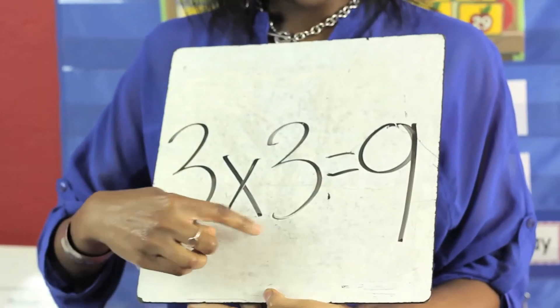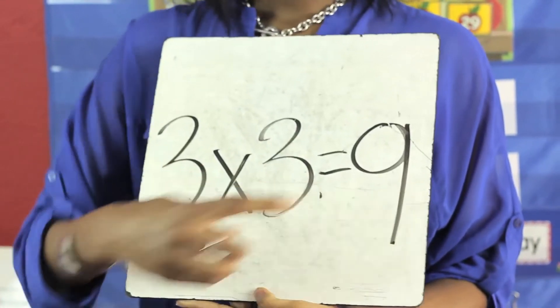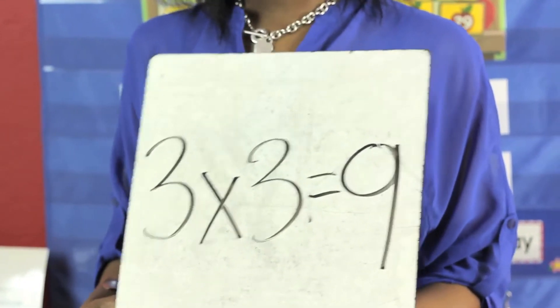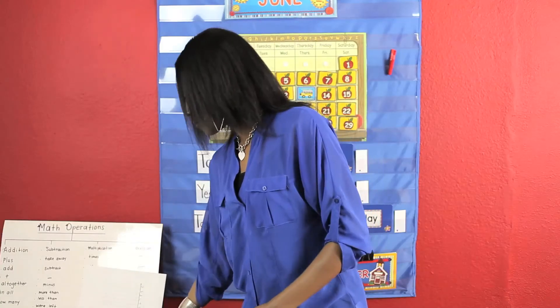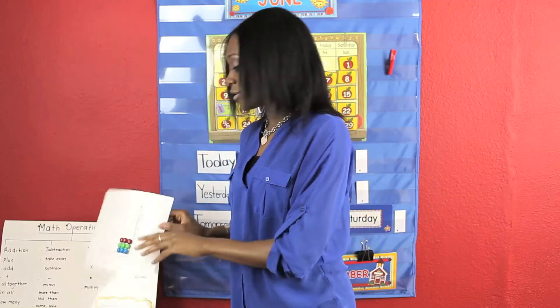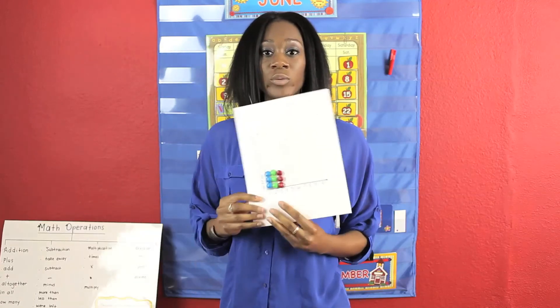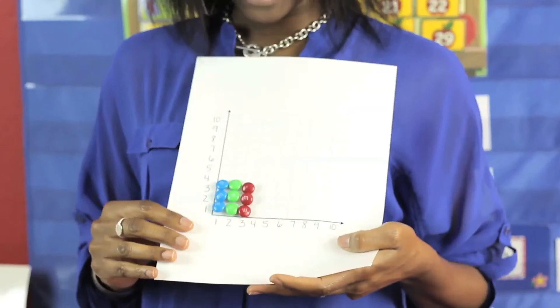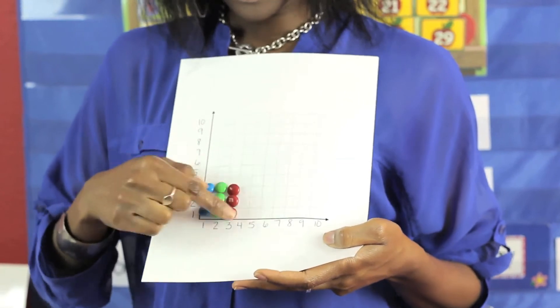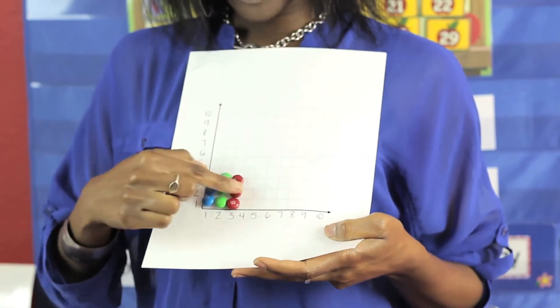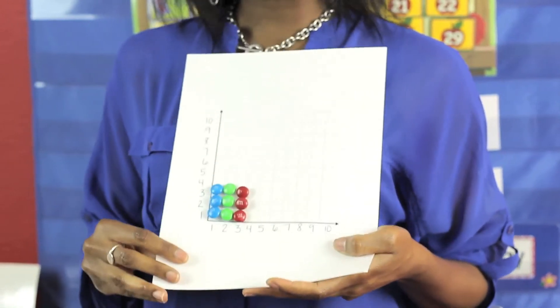Three times three equals nine. If you give students M&Ms as well as a grid, they can grid that multiplication fact — three times three equals nine.